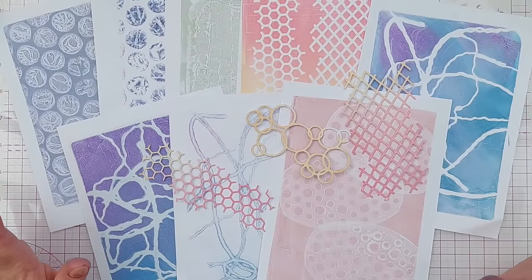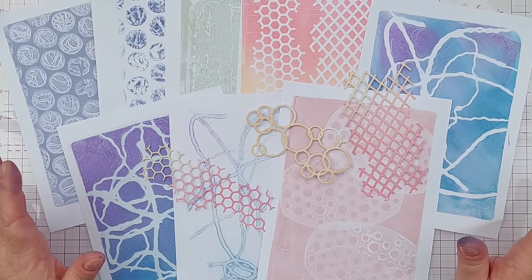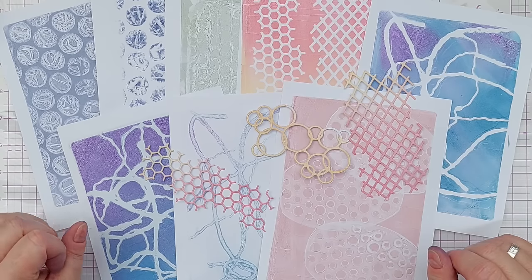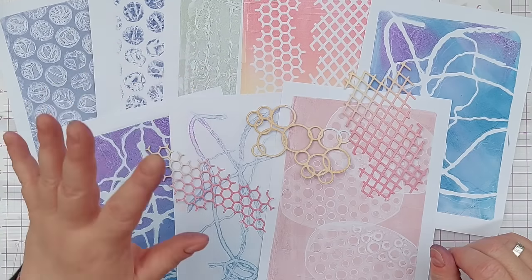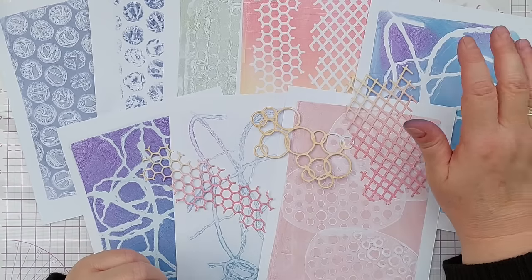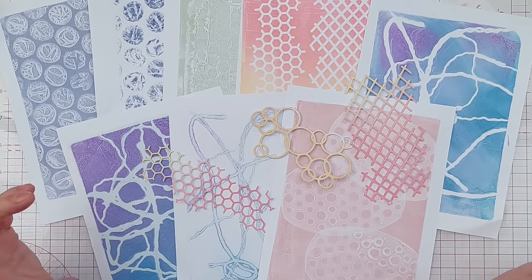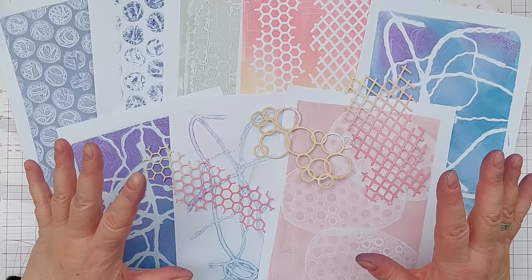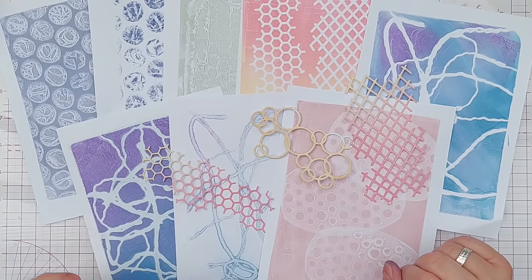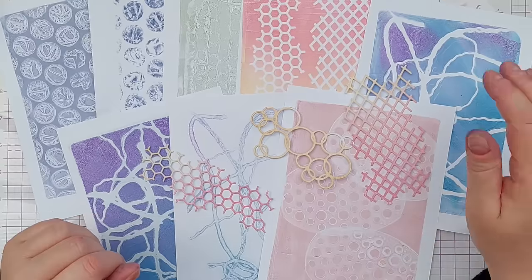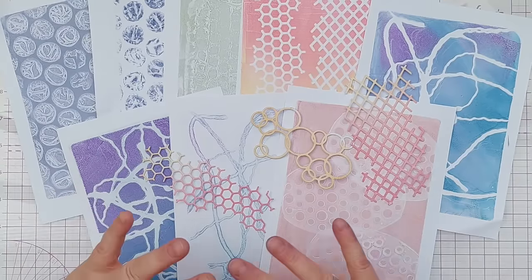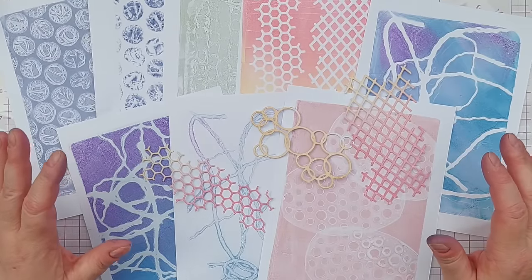So this is what I've got from just a few minutes of gel printing with my distress oxides. I used some bubble wrap, I used some die cuts, I used some string and I used the potato masher. I'd be really interested to see if you have done gel printing before using non-crafty items like bubble wrap, string, potato mashers, whatever you can think of.